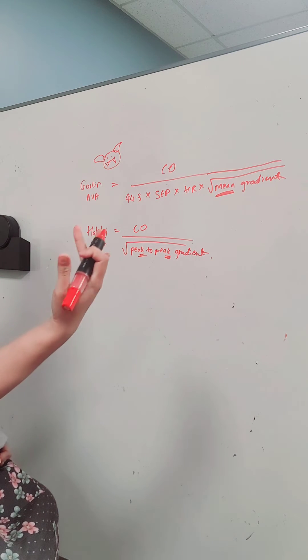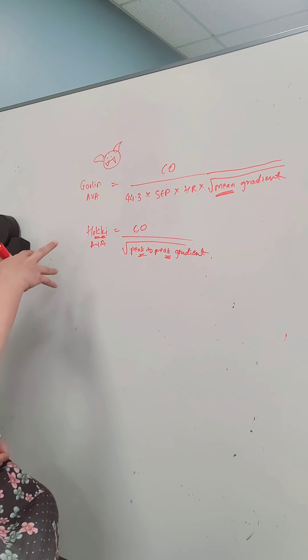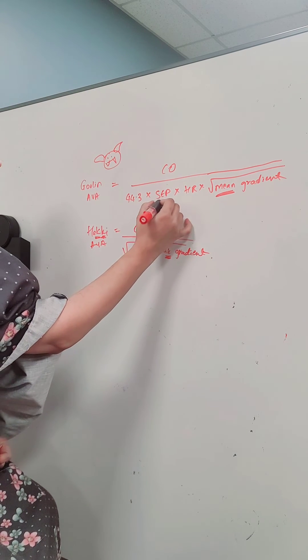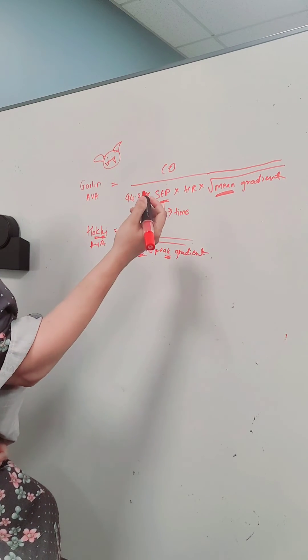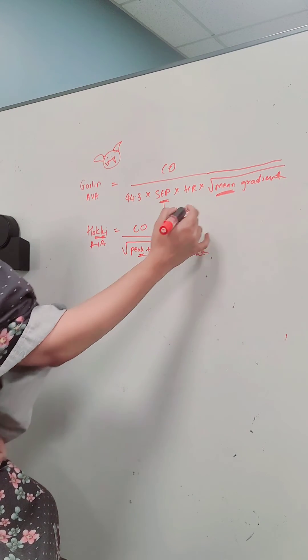And then other associations that I make is the Goblin is monster of the olden time or the ancient times. So that helps me remember that time is a part of this formula so systolic ejection period in seconds.